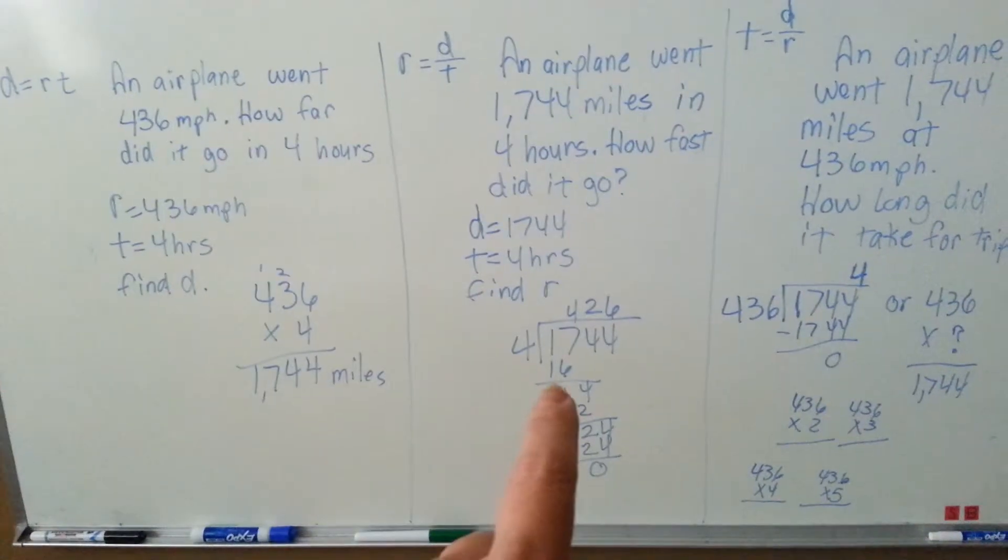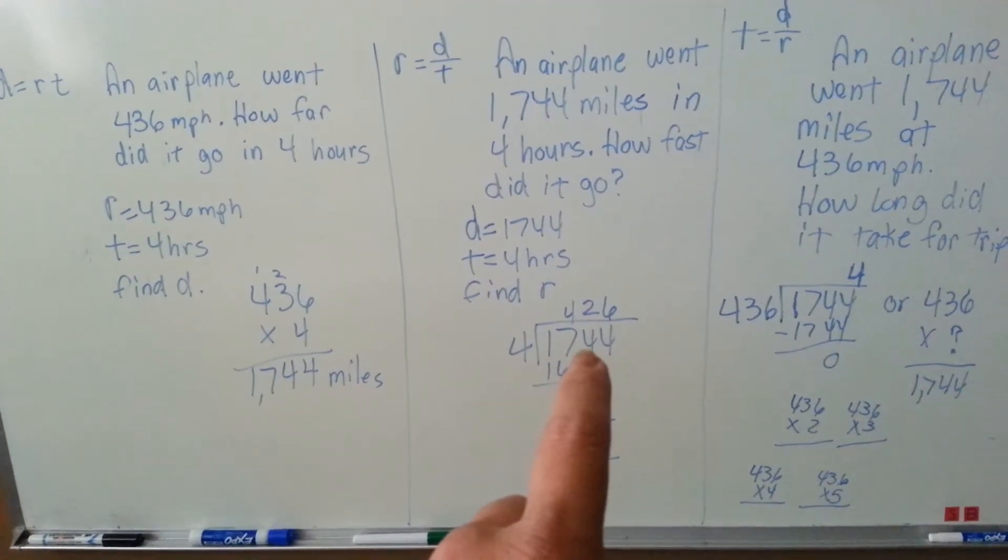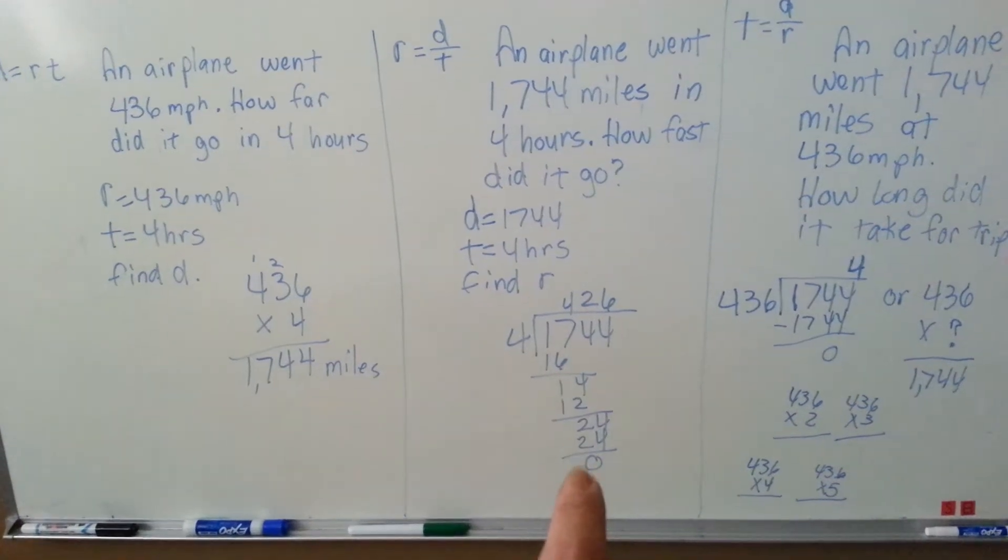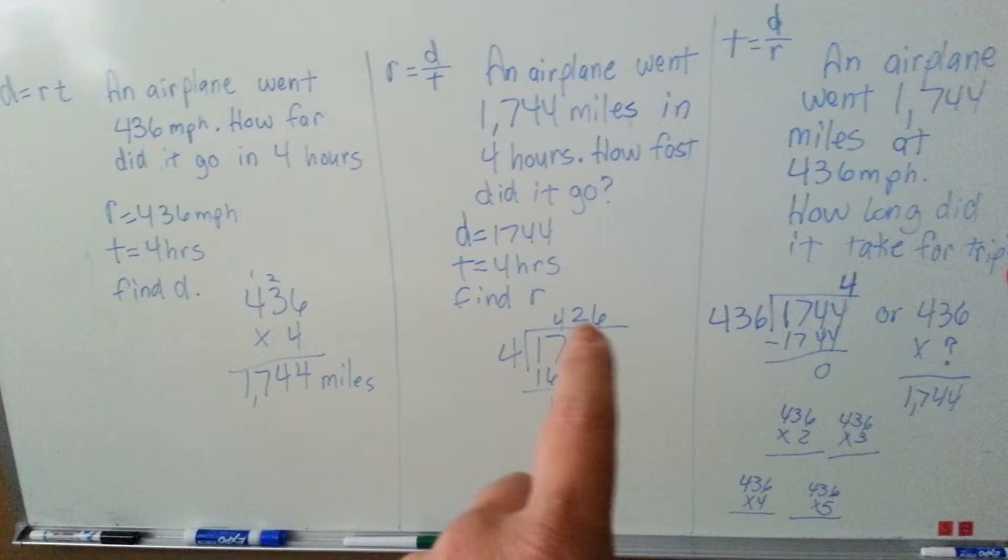Now you're trying to find the rate. So now you would divide the four hours into the distance that you went to get the answer of the rate that it went, how fast it went.